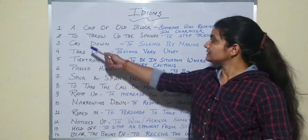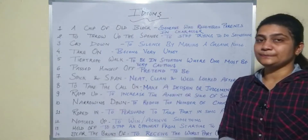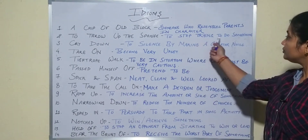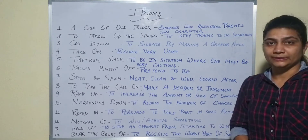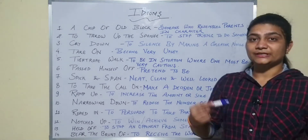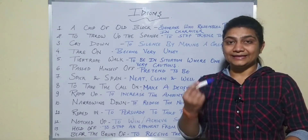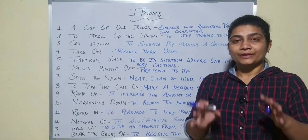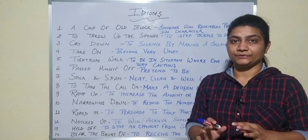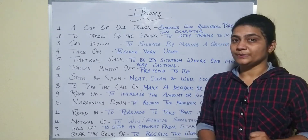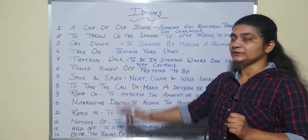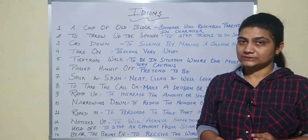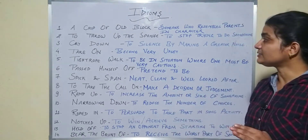Next one is 'to throw up the sponge.' To throw up the sponge ka matlab kya hota hai? To stop trying to do something. Matlab, aap koshish kar rahe hain kisi kaam ko karne ki, but at a moment jab aapko lagta hai ki ismein bahut saare hurdles hain, and you stop giving your efforts — us situation ko hum kya bolenge? You throw up the sponge. You have stopped trying to do something.